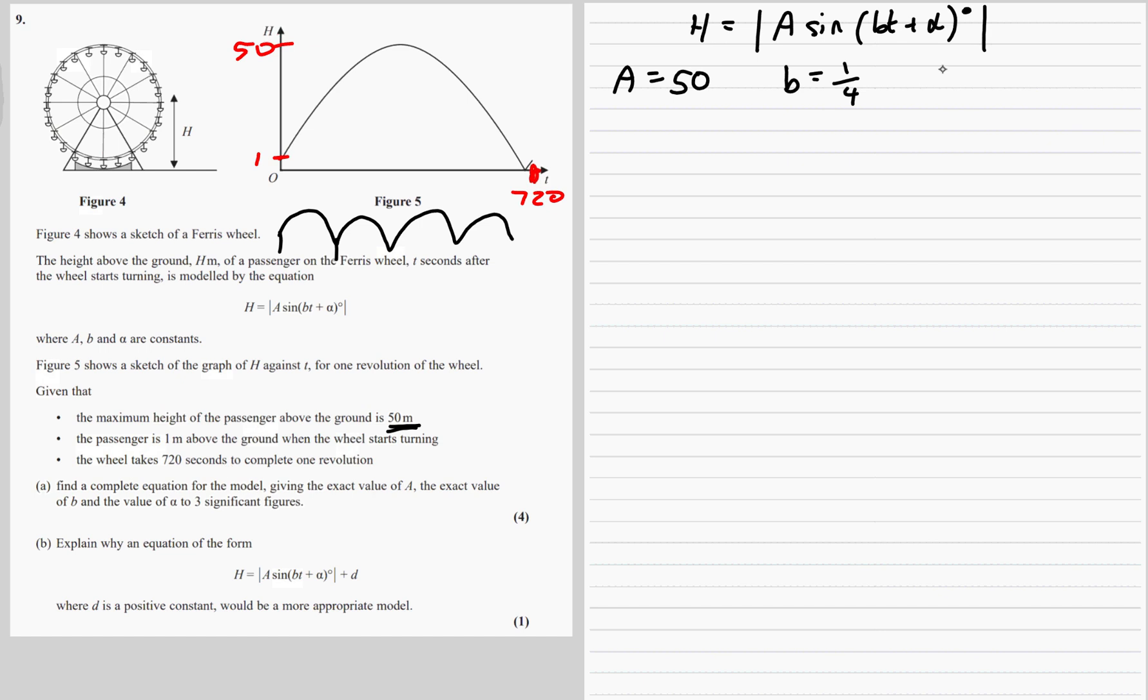So we still need to find alpha, but we're finding it to three significant figures. We've got one more bit of information to use, and that's h is 1 and t is 0. So if we substitute those in, h is 1, so 1 equals the mod of 50 sine one quarter times 0 plus alpha. So 1 equals 50 sine alpha.